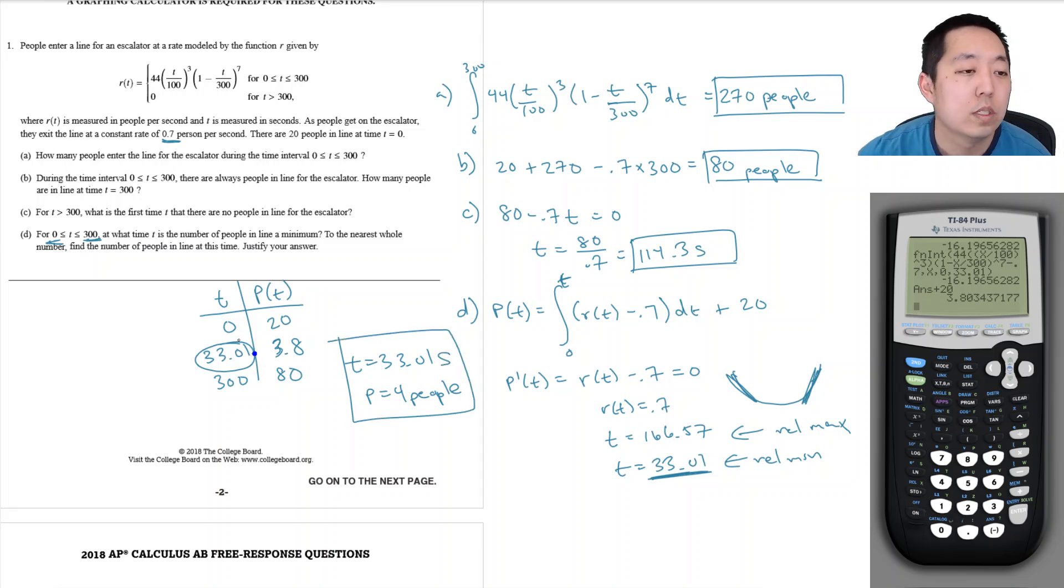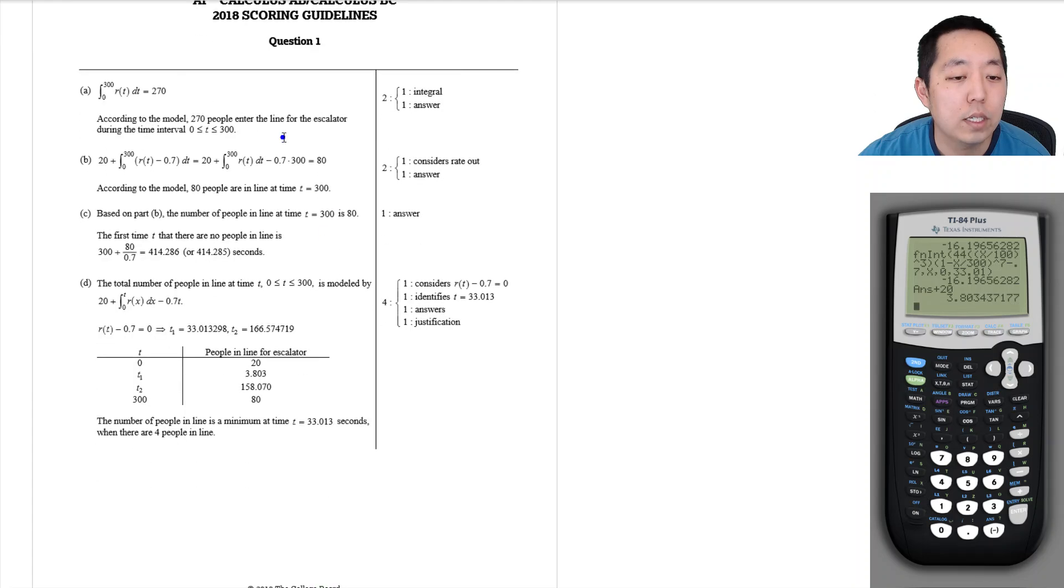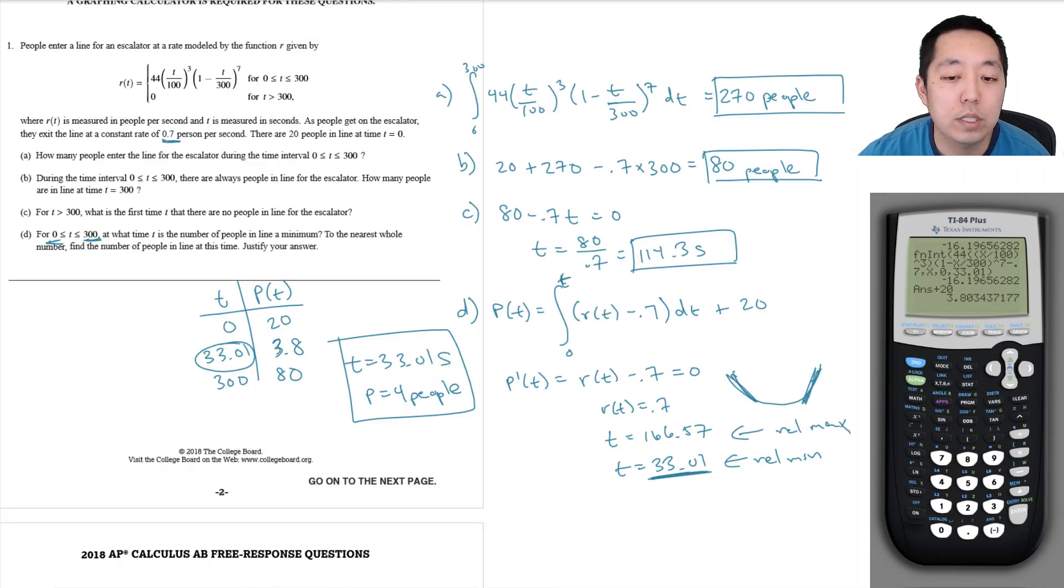Let's take a look at the solutions. 270, 80, 414.286. Oh, you know I needed to add 300. In part C this is the time after 300 seconds, so I need to add 300 here. Let me write that in red. I didn't answer that correctly, so this would have been 414.3 seconds.